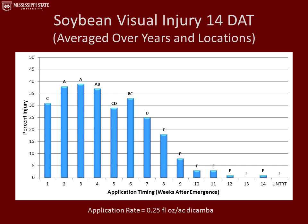This graph represents soybean visual injury 14 days after the applications were made, averaged over all years and locations. On the y-axis is percent visual injury and on the x-axis is the application timing. The greatest amount of injury was observed at weeks two, three, and four, ranging from about 37% to 39% visual injury. After the eight-week application was made, we saw no significant visual injury.